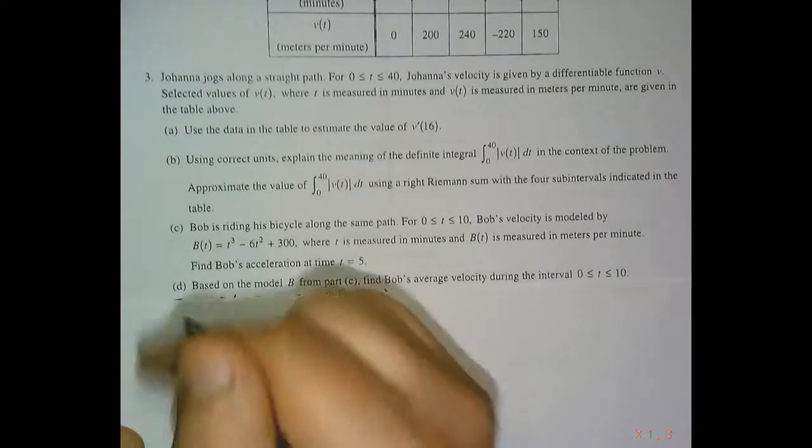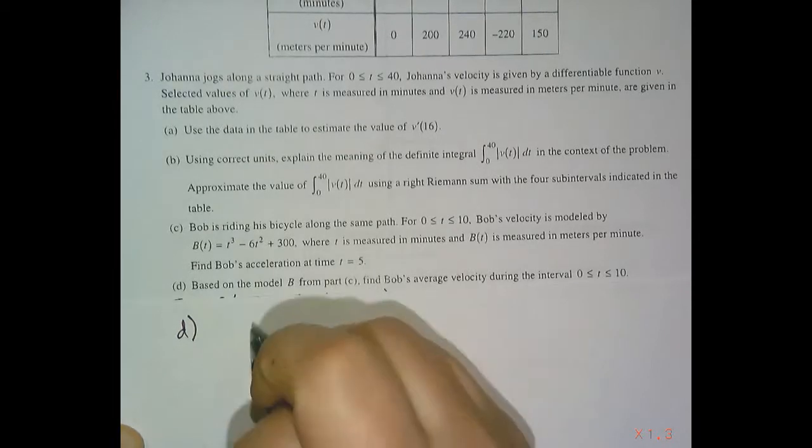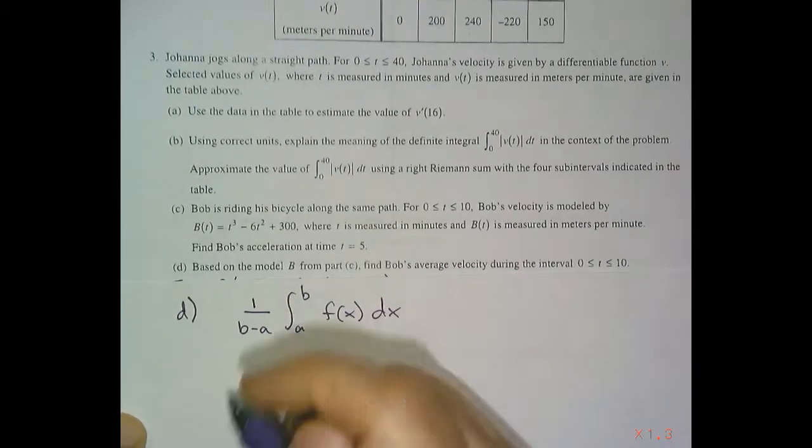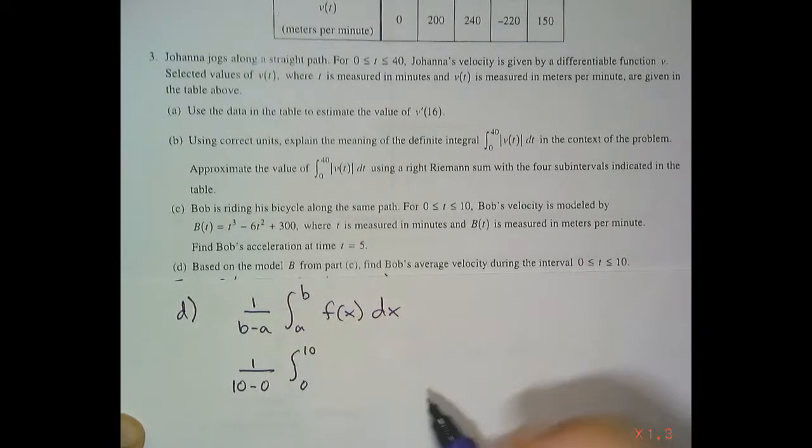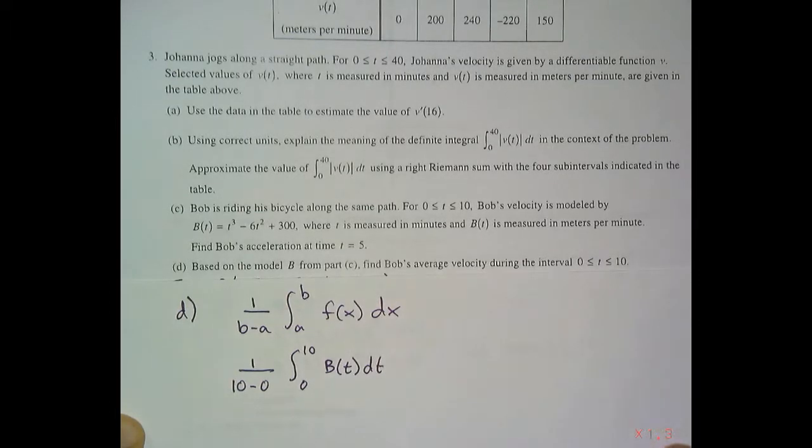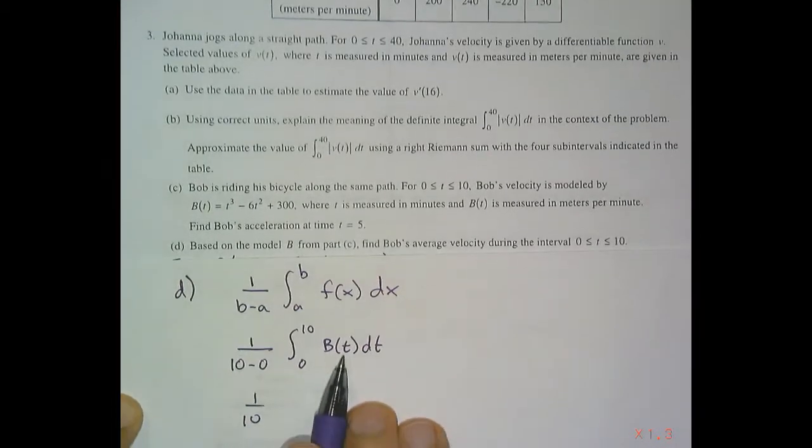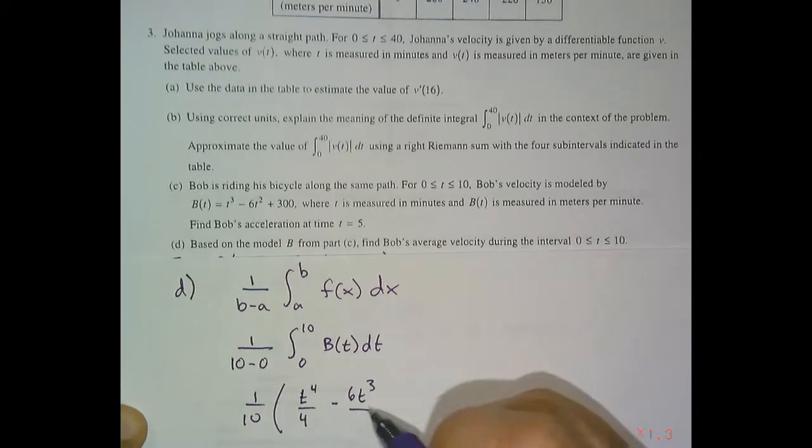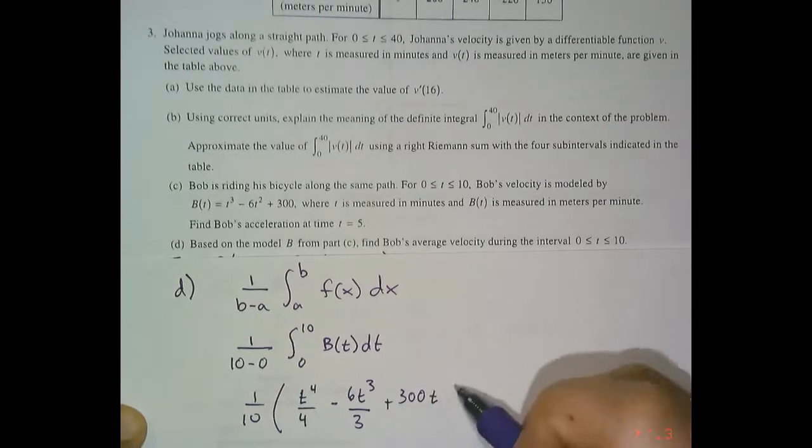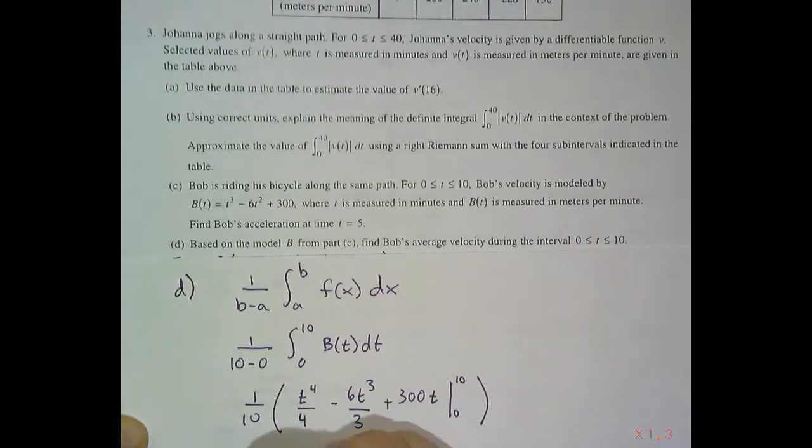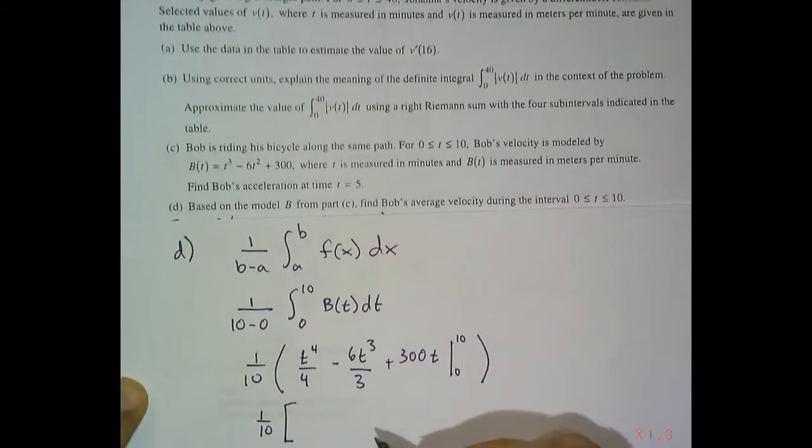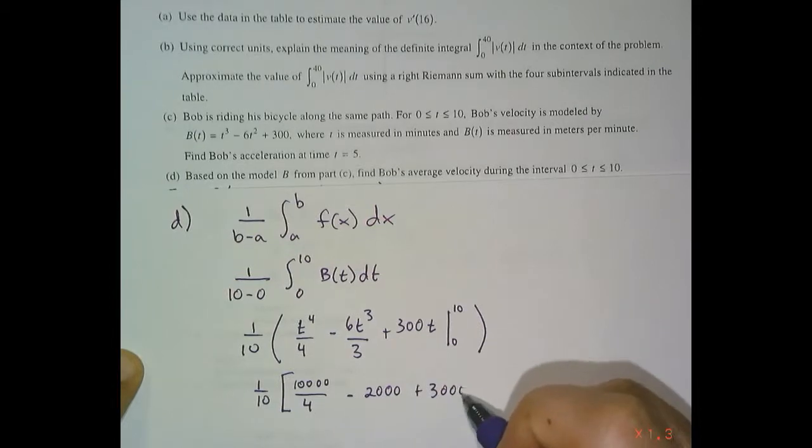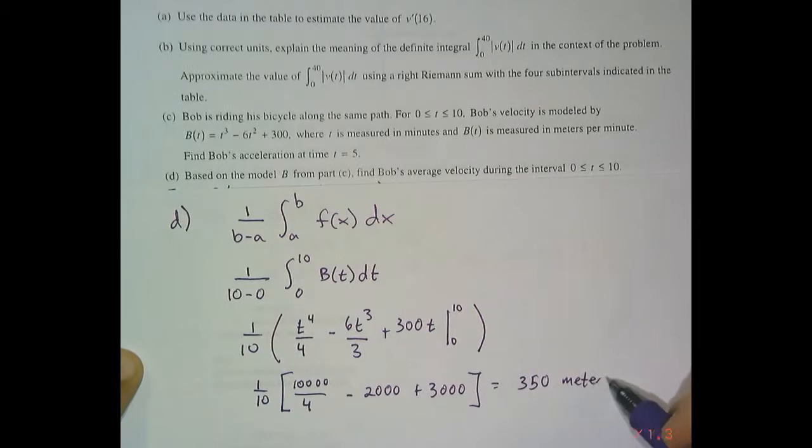Based on the model from B, find Bob's average velocity. Well, we have a velocity function, so we just need to do average function value of our velocity function. So there's our go-to average function value. For us, we are doing one-tenth the integral from 0 to 10 of the velocity function, which is B of T, DT. That's one-tenth the antiderivative of B of T evaluated from 0 to 10. So T to the fourth over 4 minus 6T cubed over 3 plus 300T evaluated from 0 to 10. When you clean this out, you get one-tenth times 10,000 fourths minus 2,000 plus 3,000, which equals an average velocity of 350 meters per minute.